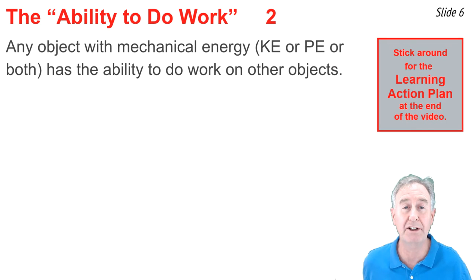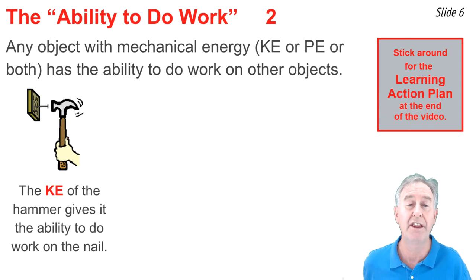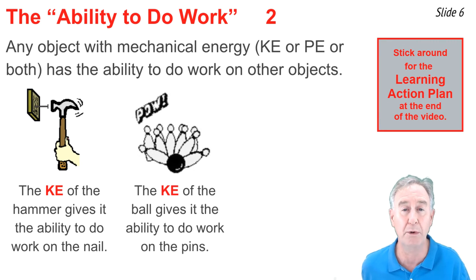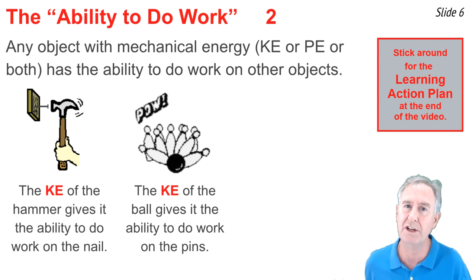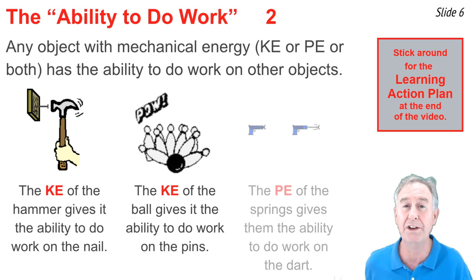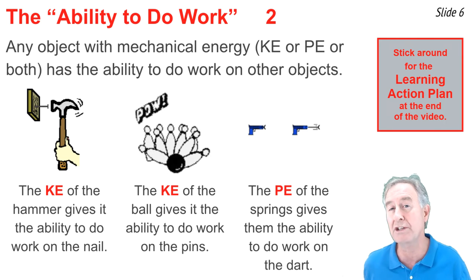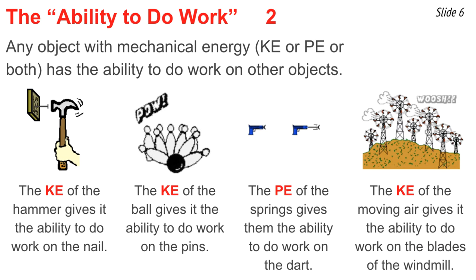Any object that possesses mechanical energy — either the kinetic or the potential form — has the ability to do work. Consider the moving hammer striking the nail: the hammer has kinetic energy, which gives it the ability to do work upon the nail, displacing it into the block of wood. Or consider the bowling ball at the bowling alley — it has kinetic energy, giving it the ability to do work upon the pins when it strikes them. Consider the compressed springs of a dart gun, which have elastic potential energy giving them the ability to do work upon the dart once released. And the moving air at a wind farm possesses kinetic energy, giving it the ability to do work on the blades of the windmill.